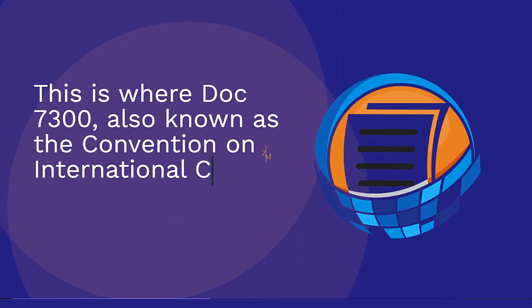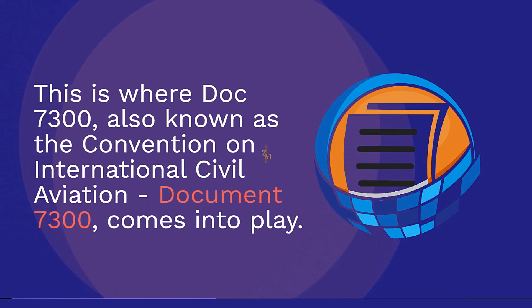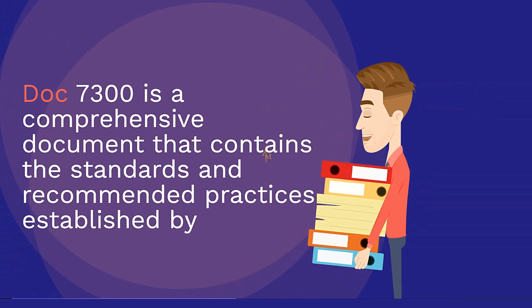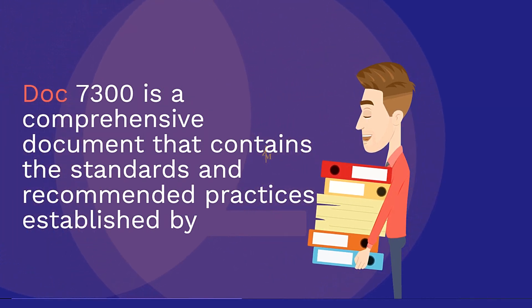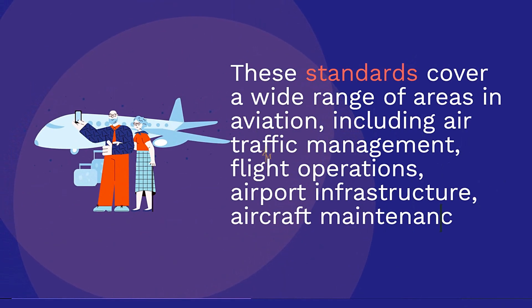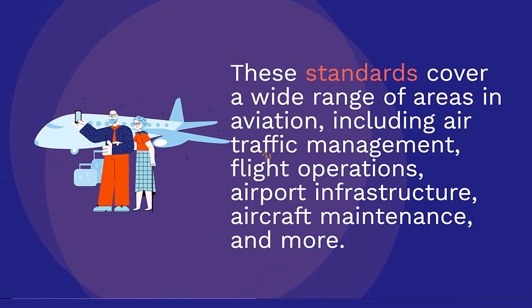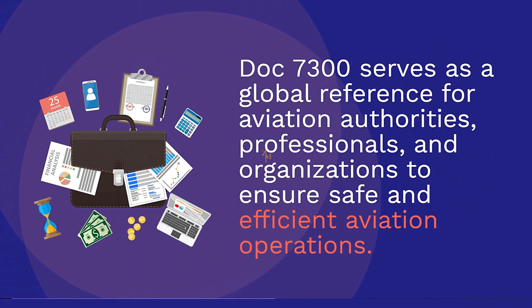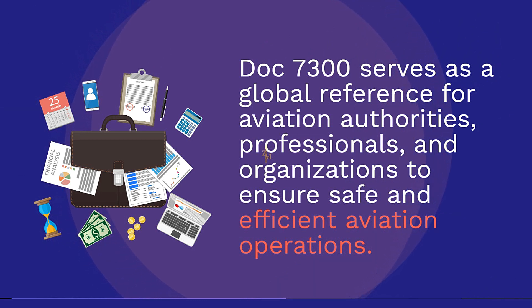This is where DOC 7300, also known as the Convention on International Civil Aviation Documents 7300, comes into play. DOC 7300 is a comprehensive document that contains the standards and recommended practices established by ICAO. The standards cover a wide range of areas in aviation, including air traffic management, flight operations, airport infrastructure, aircraft maintenance, and more. DOC 7300 serves as a global reference for aviation authorities, professionals, and organizations to ensure safe and efficient aviation operations.